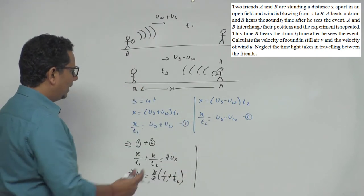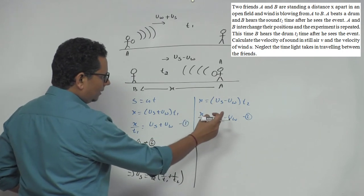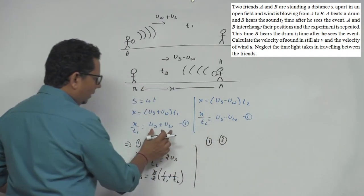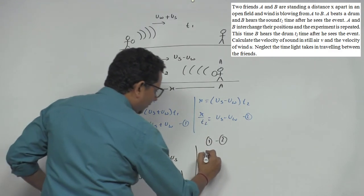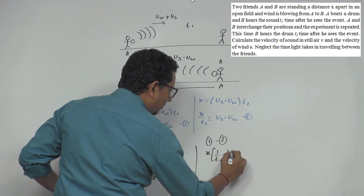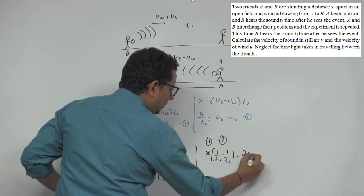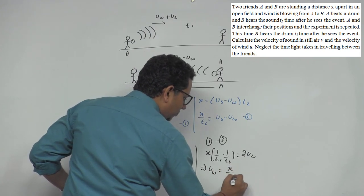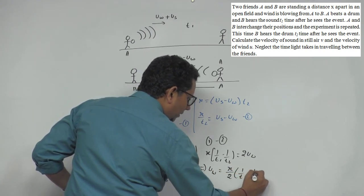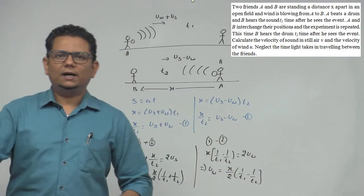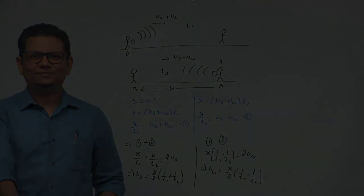If we want velocity of wind, we subtract one from the other. Equation 1 minus equation 2. When we subtract, left hand side becomes X common, 1 by T1 minus 1 by T2, will be equal to twice VW, which implies velocity of wind is X by 2, 1 by T1 minus 1 by T2. This is the velocity of wind. So these will be our final answers.